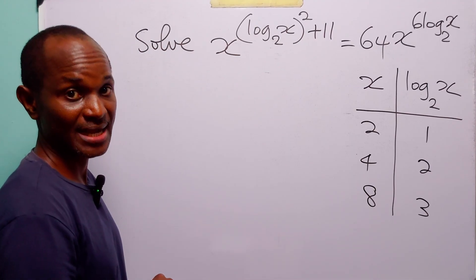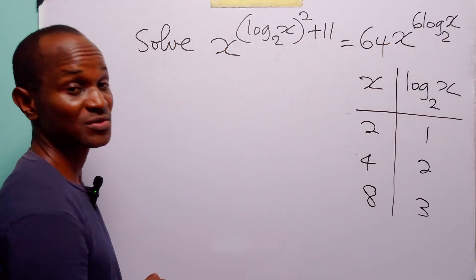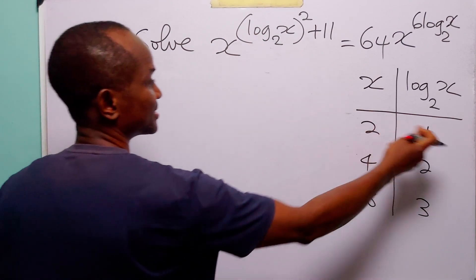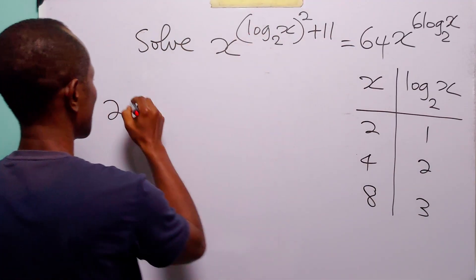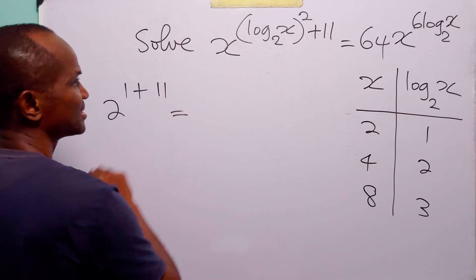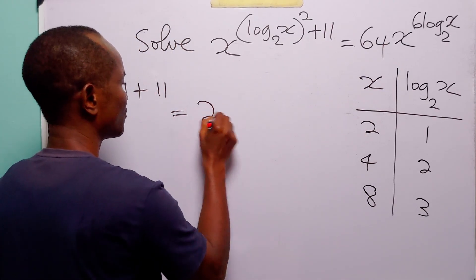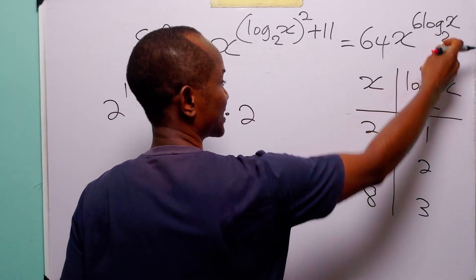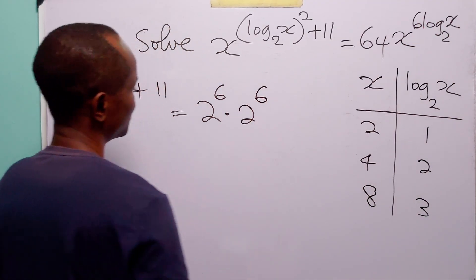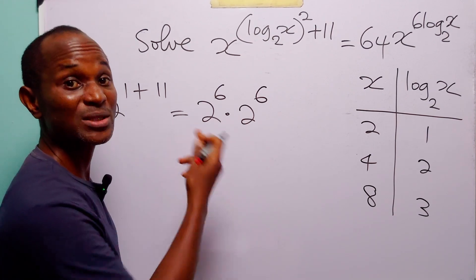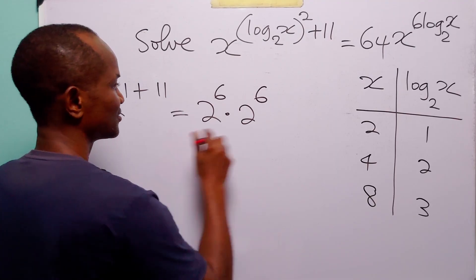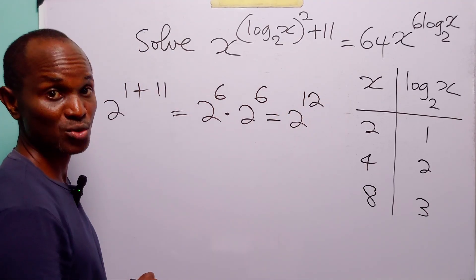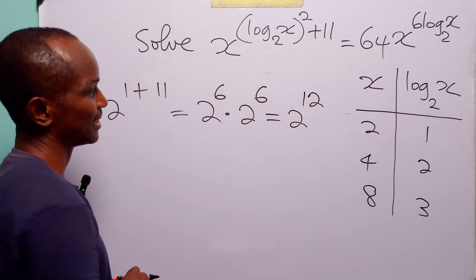Now let us substitute the values of x and log to base 2 of x into the original equation to verify. For x equals 2, log to base 2 of x is 1. So we have 1 squared plus 11 equals 12 on the left. On the right, 64 is 2 to the power 6, multiplied by x which is 2, and log to base 2 of x is 1, so 6 times 1 equals 6. This gives 2 to the power 12, and 1 plus 11 is also 12. Left-hand side equals right-hand side.